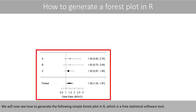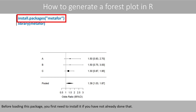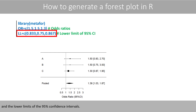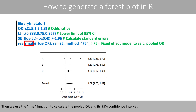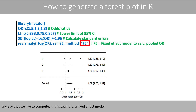We will now see how to generate a forest plot in R, a free statistical software tool. We use the metafor package, which we first need to load with the appropriate code after installing it. We enter our odds ratios and the lower limits of the 95% confidence intervals, calculate the standard errors of the logged odds ratios using the same formula as before, and then use the rma function to calculate the pooled odds ratio and its 95% confidence interval, plugging in the logged odds ratios, the standard errors, and specifying a fixed-effect model.